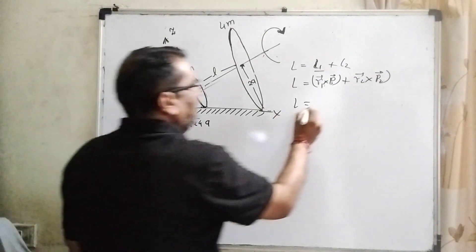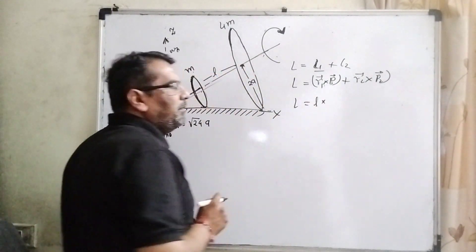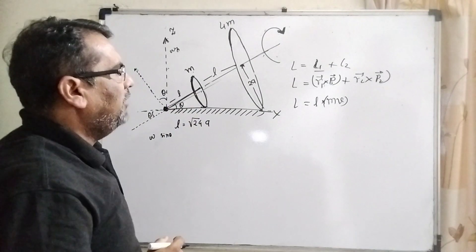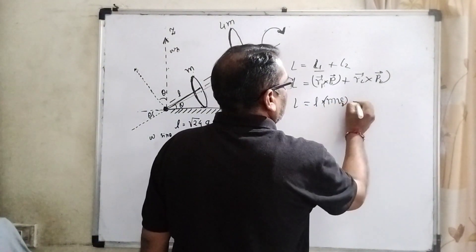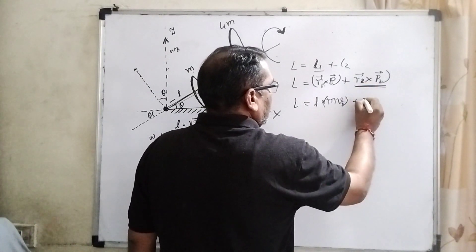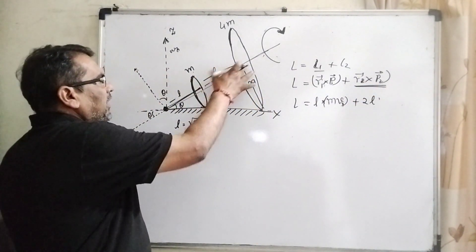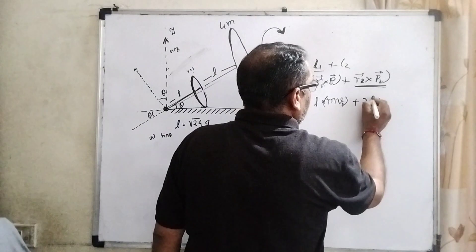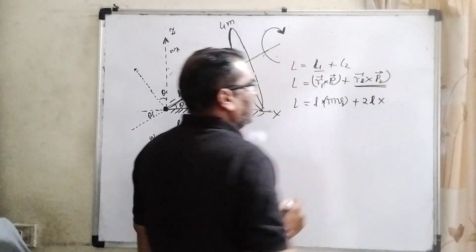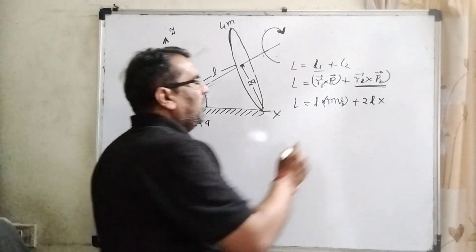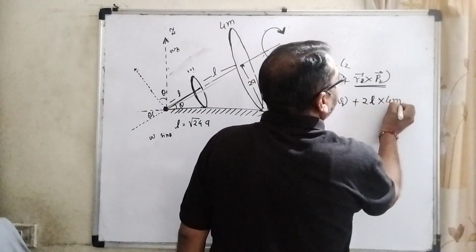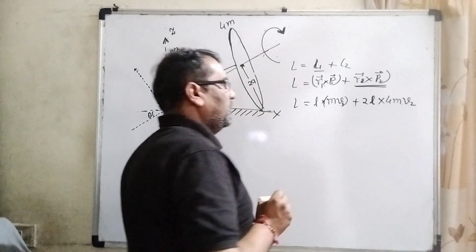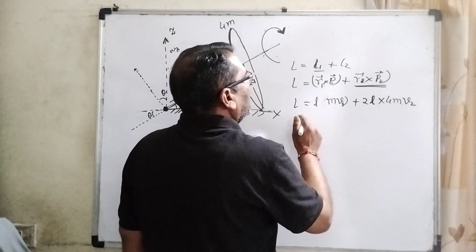What is r? Here you have given the length l, and what is p? Linear momentum, mass into velocity. Your mass is given m and velocity is v1. And for the same thing we are doing here: length is 2l because total length is l and 2l, total distance is 2l. So here we put 2l in the place of r2, and in the place of p2, linear momentum - what is the mass? Mass is given 4m and linear velocity is v2.